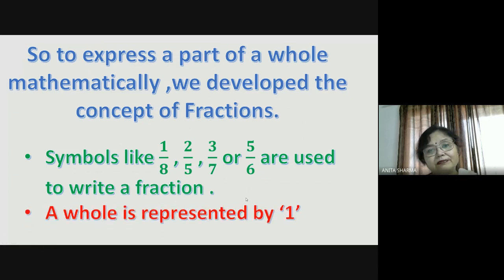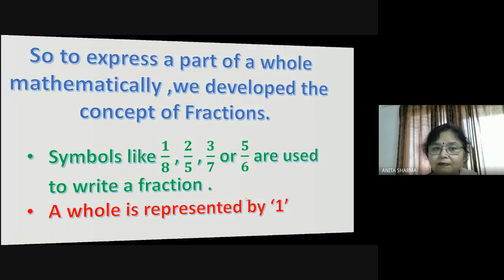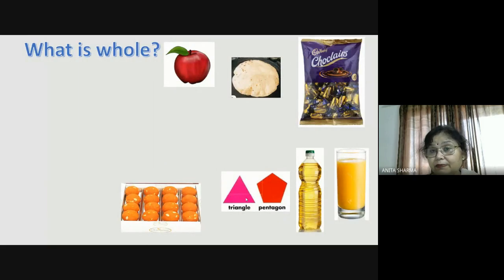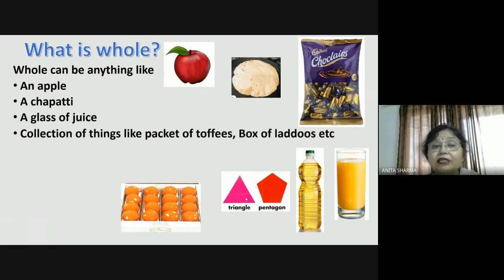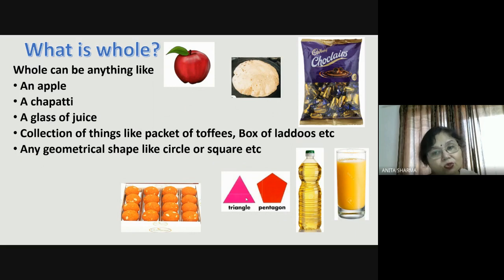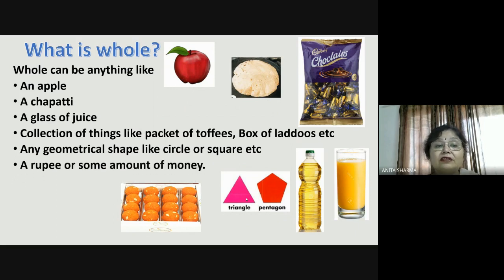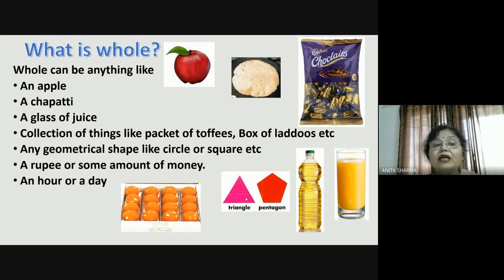A whole is represented by one. One whole — anything is represented by the symbol one. Now, what is whole? Whole can be anything like an apple. We can make parts of an apple, or a chapati — we can make parts of a chapati too. Whole can be a glass of juice, a collection of things like packets of toffees or a box of laddoos, any geometrical shape like a circle or square, or a rupee or some amount of money. An hour or a day — two hours is a part of a day.